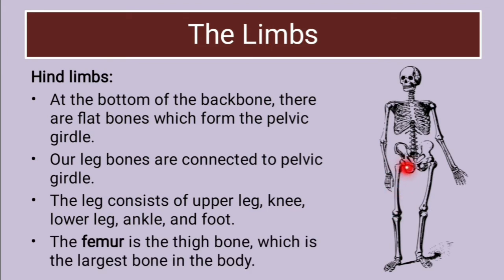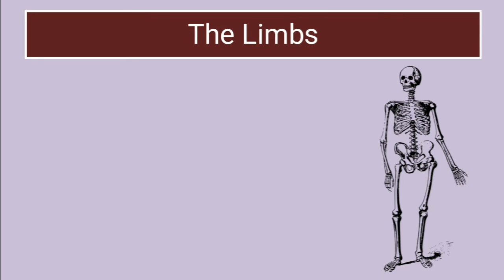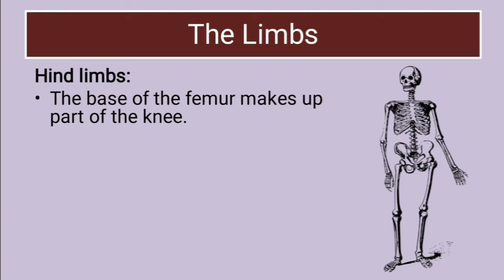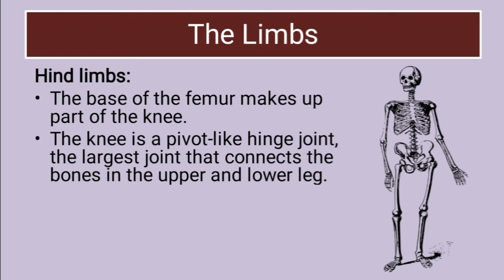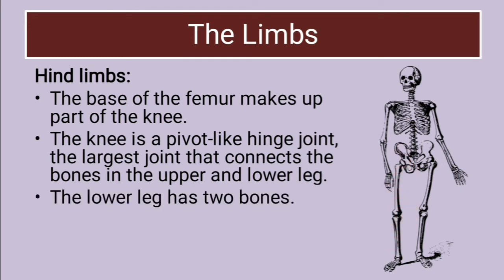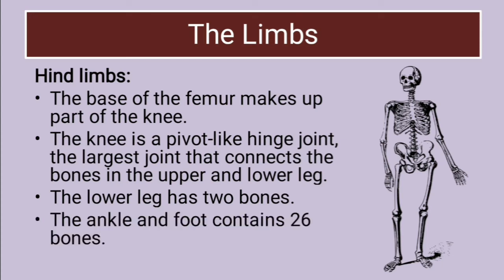The biggest bone is the thigh bone, also called the femur, which is the largest bone in our body. The base of the femur makes up part of the knee. The knee is a hinge joint — the largest joint — that connects the bones in the upper leg to the lower leg, and is very important especially for walking. The lower leg has two bones, and the ankle and the foot contain 26 bones.